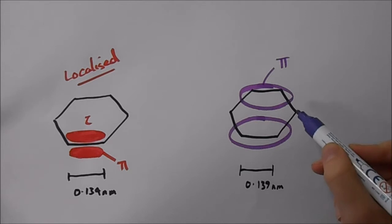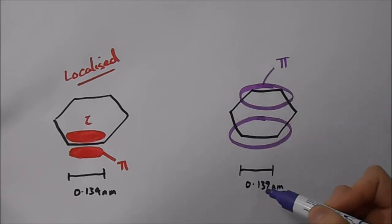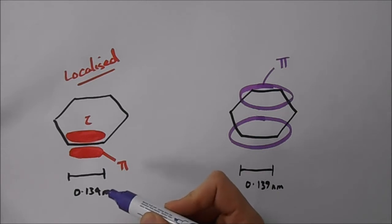But this time, each one of these bonds we find is 0.139 nanometers, which is a little bit longer than the CC double bond.